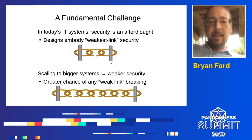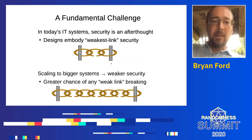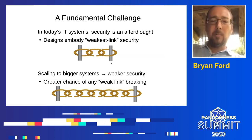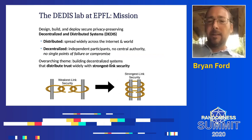As our whole computing ecosystem gets bigger and more complex — more data, more interconnected systems — it should be clear that more complexity makes weakest link security much worse, because the more weak links there are in the chain, the higher the probability that any one of them will break. For decades we have known about approaches, at least in the research world, that can turn this around and convert weakest link security into strongest link security.